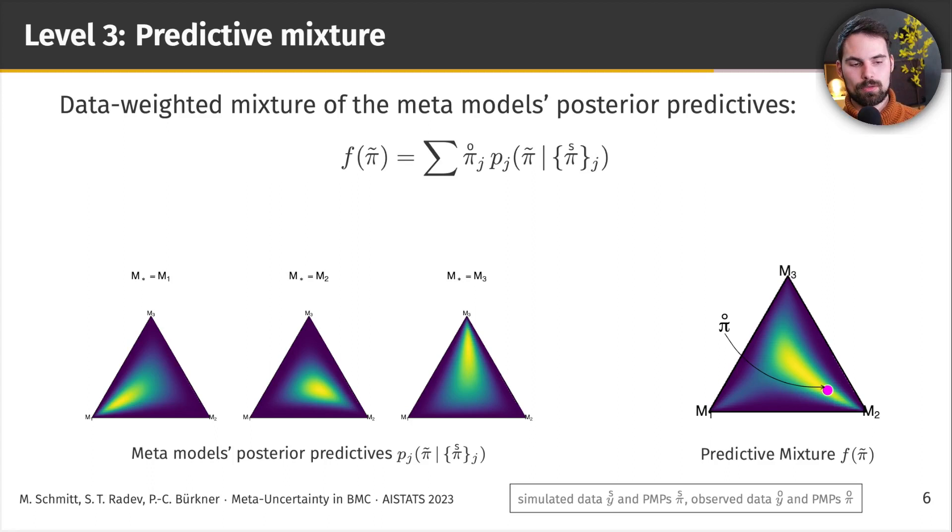And now, if we use these observed posterior model probabilities as mixture weights for the posterior predictives of the meta-models, we gain a notion of what we can expect the next posterior model probabilities of another observed data set to look like. Let me say it again with a different example. If we observe extreme evidence for model 3, you might wonder, are we being overconfident here? And our meta-uncertainty framework would give the result, yes, you're probably overconfident, because typically data that's actually generated by model 3 wouldn't even yield such extreme posterior model probabilities for model 3.